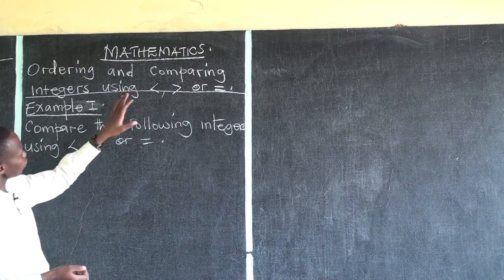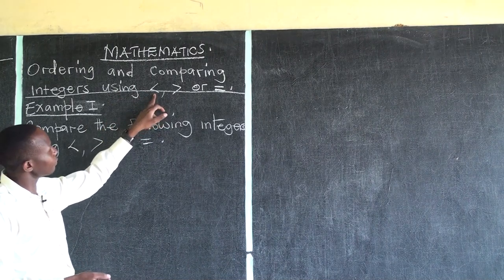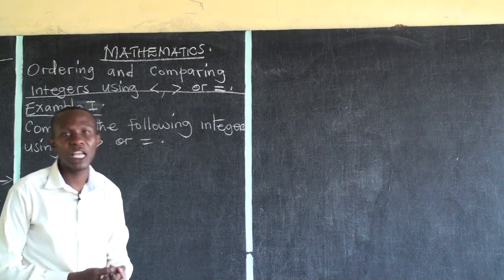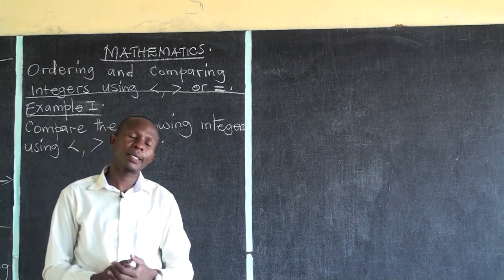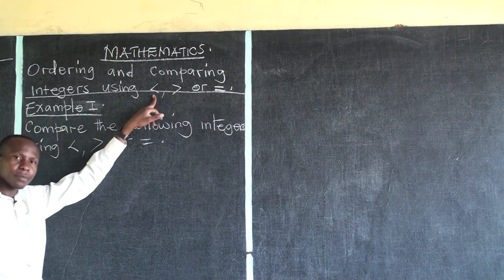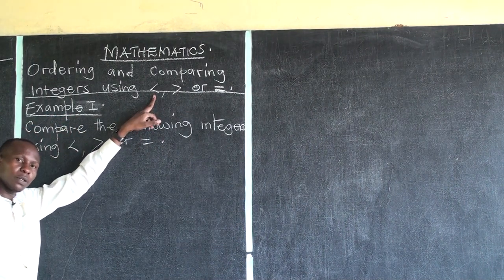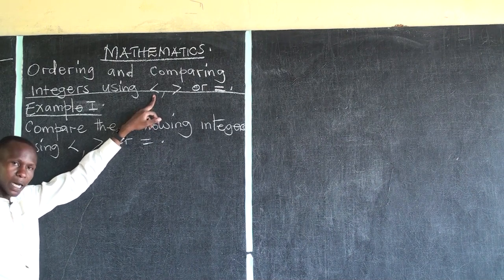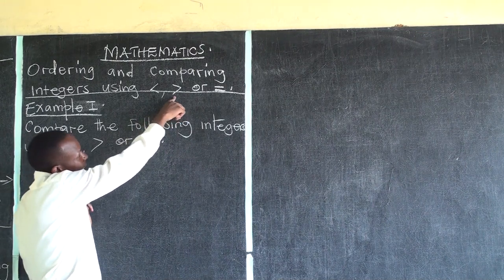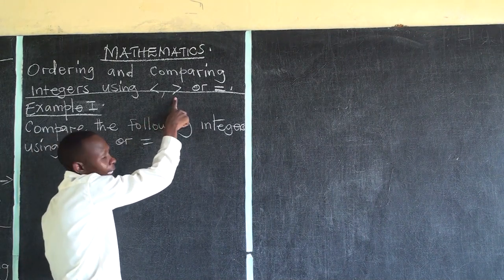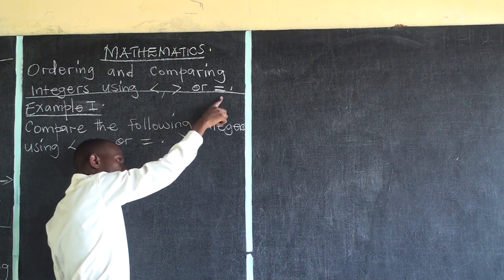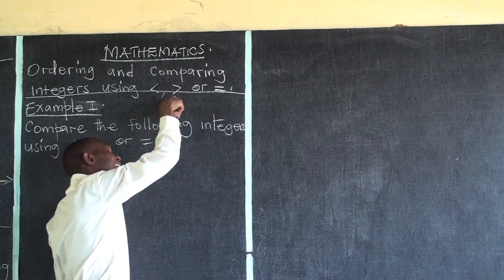We have three comparison signs. The first sign is less than, followed by greater than, then lastly equal to. Let's look at where we use each of these signs.